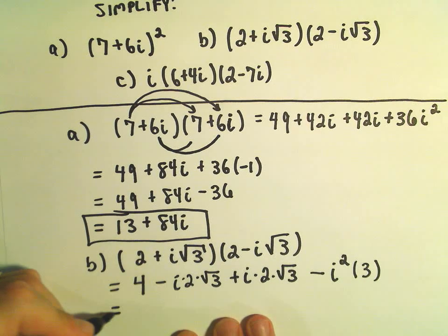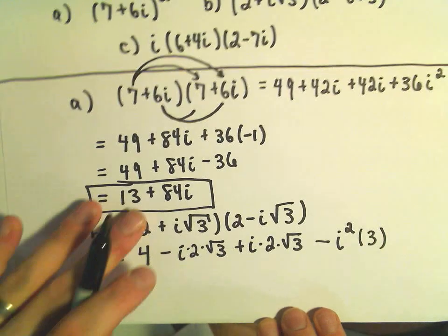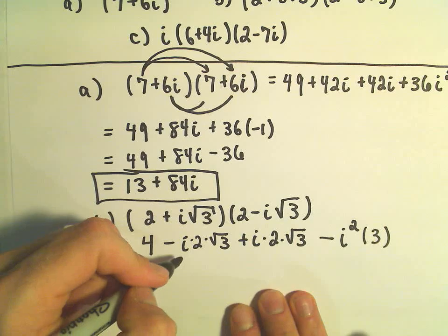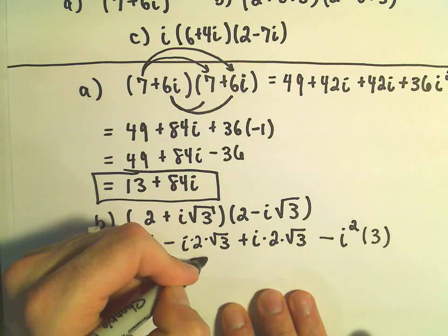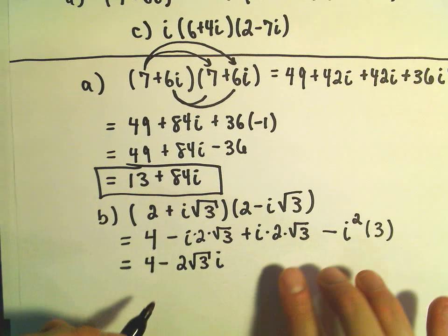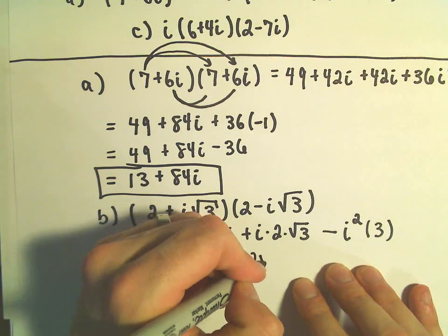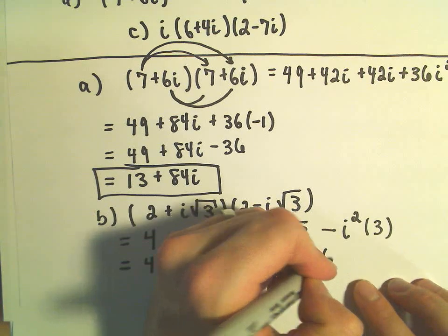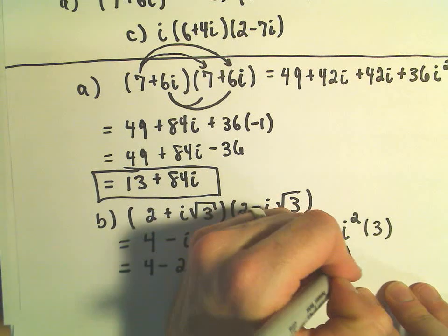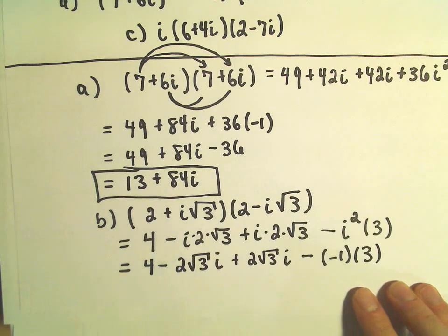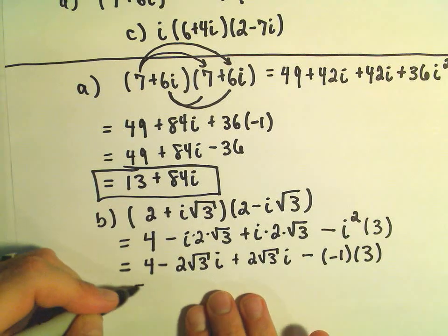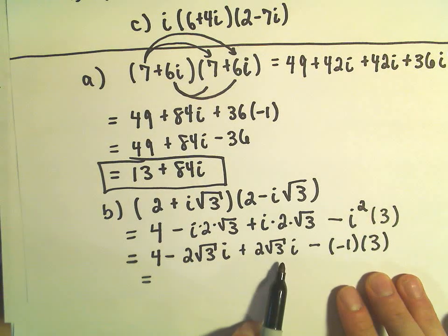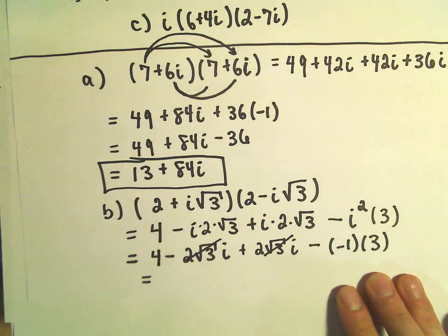And now I'm going to try to collect some like terms here. So I think I'm going to rewrite this a couple times. We've got 4 minus, again, this is 2 square root of 3, I'm going to put my i next to it. And then we have a positive 2 square root of 3 times i. Minus, now, i squared, we can replace that with a negative 1. And then we still have our 3 left over. So, almost there. We've got, notice we have a negative 2 root 3i and a positive 2 root 3i. Those are simply going to cancel out.